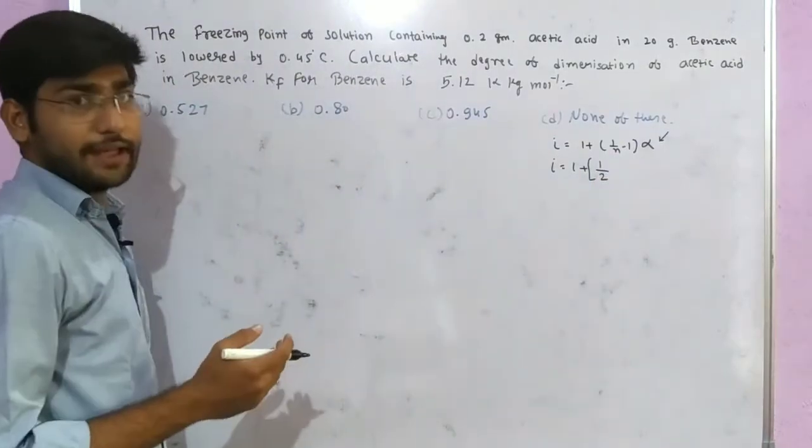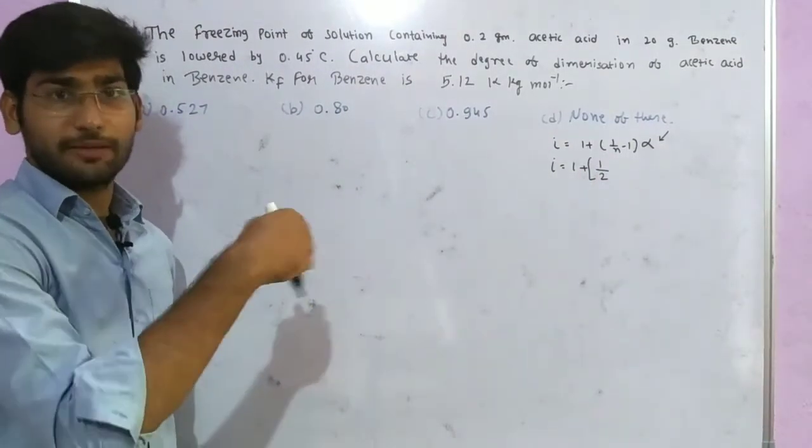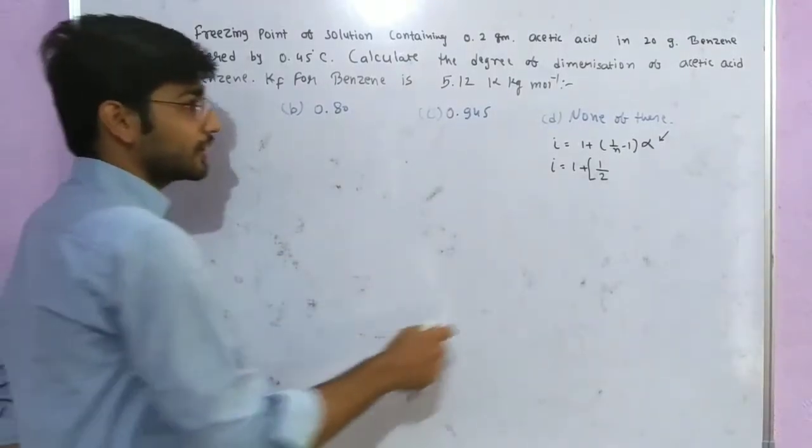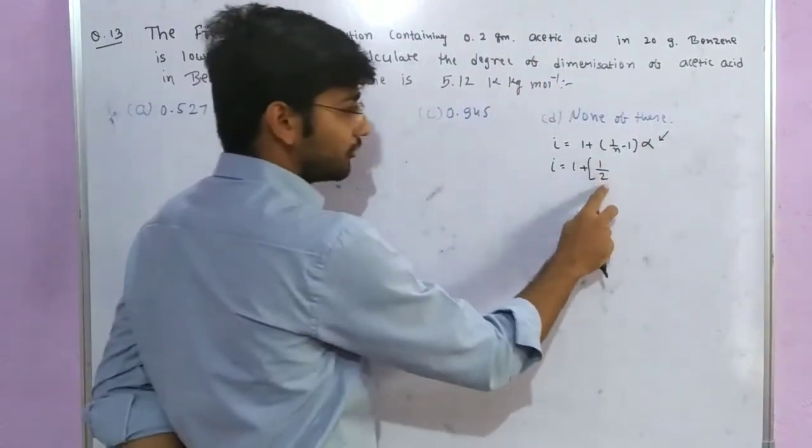When ionization or dissociation happens, products form. But for association, molecules combine together. In dimerization, two molecules associate, so n equals 2.